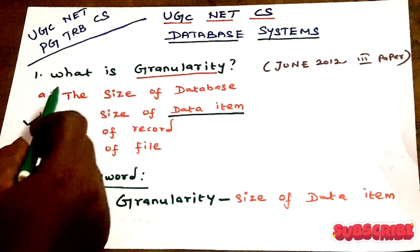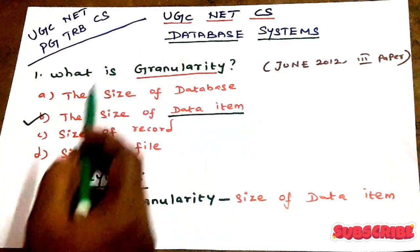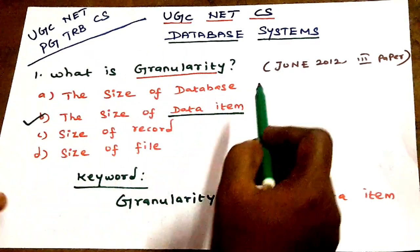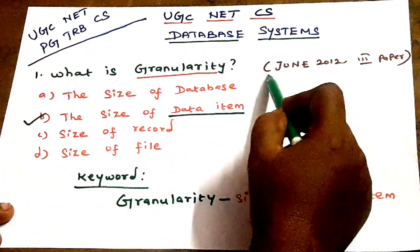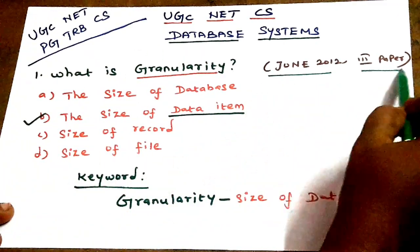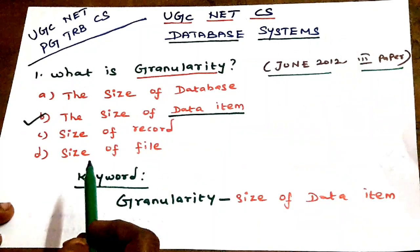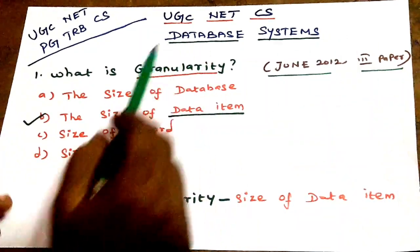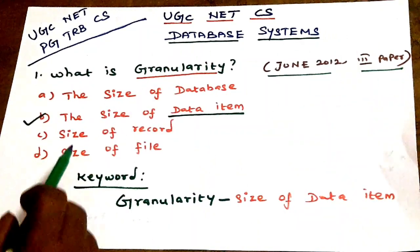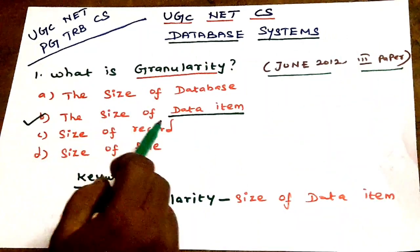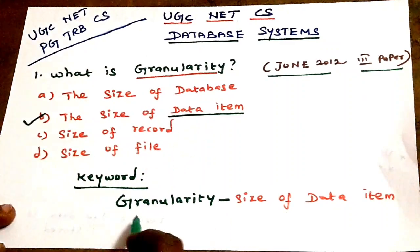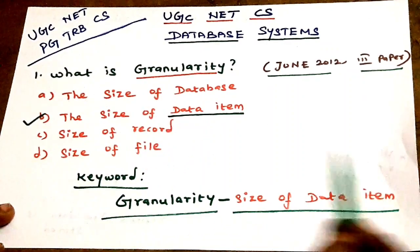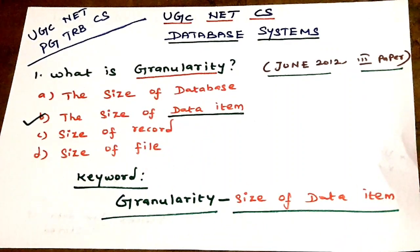First question: what is granularity? This question is from June 2012, third paper. Granularity means the size of the data item. The keyword is: granularity equals size of the data item.